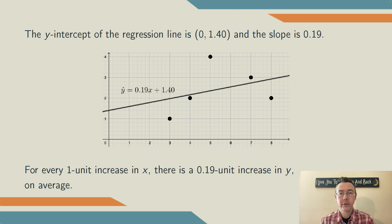The slope measures how fast the y-values increase on average as x increases. Said a little bit differently, it's the increase in y that you typically get after a one-unit increase in x. So in this example, for every one-unit increase in x, there's a 0.19-unit increase in y on average.